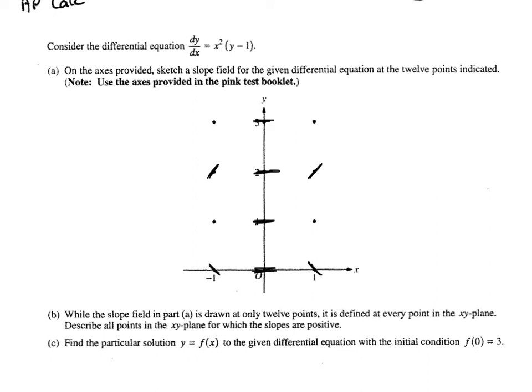Those will be negative and 0. And these should be just a little bit steeper. And there is the slope field for part B.